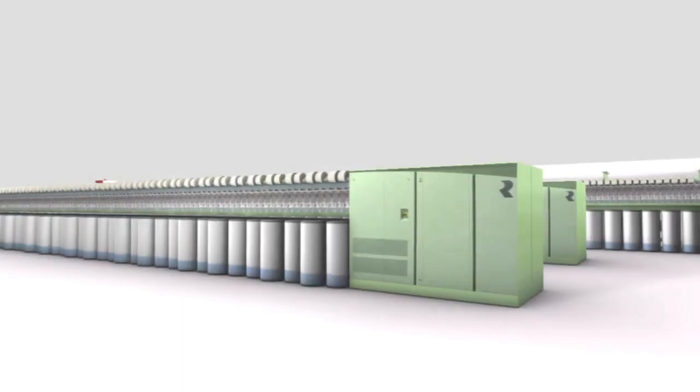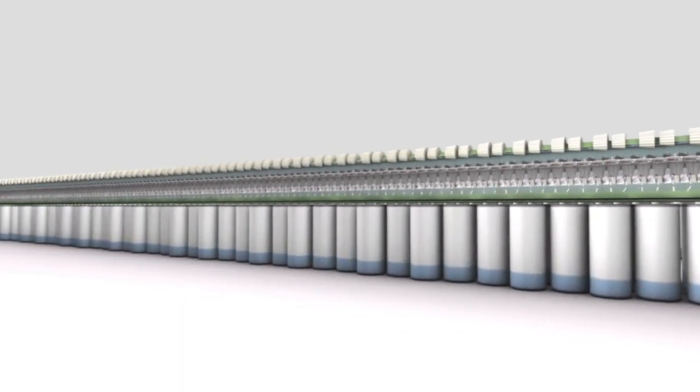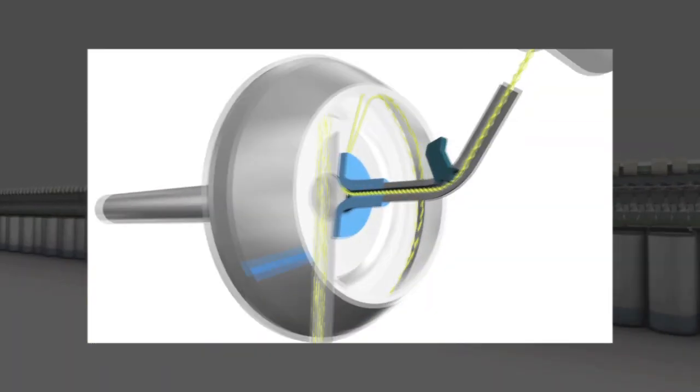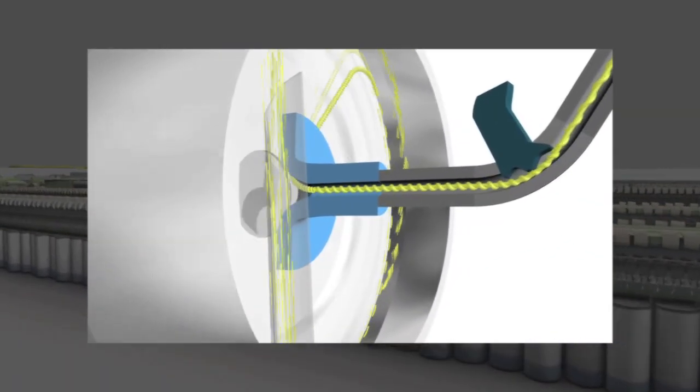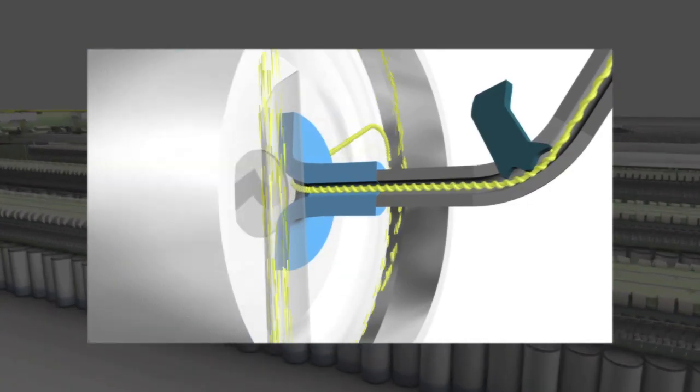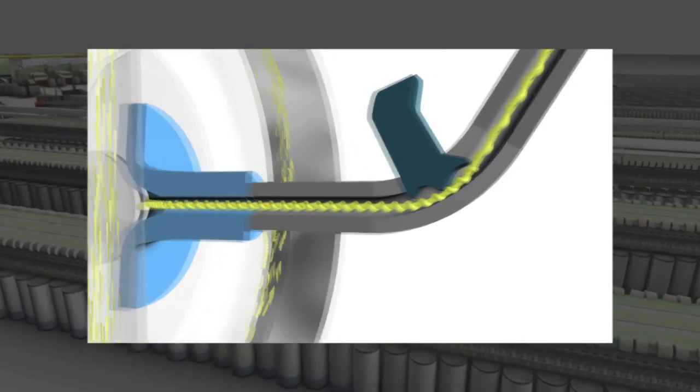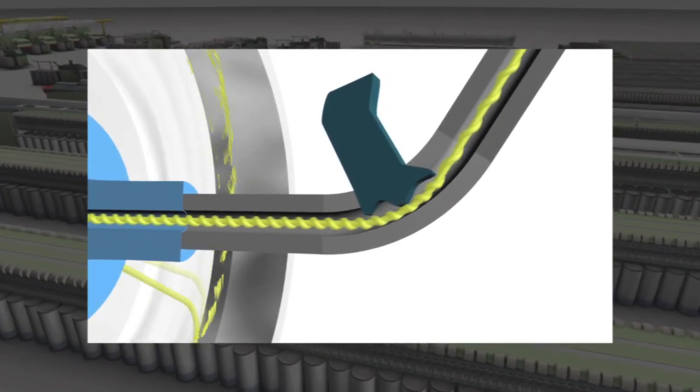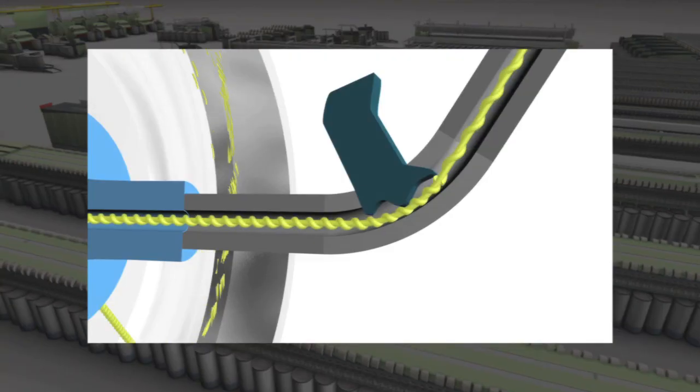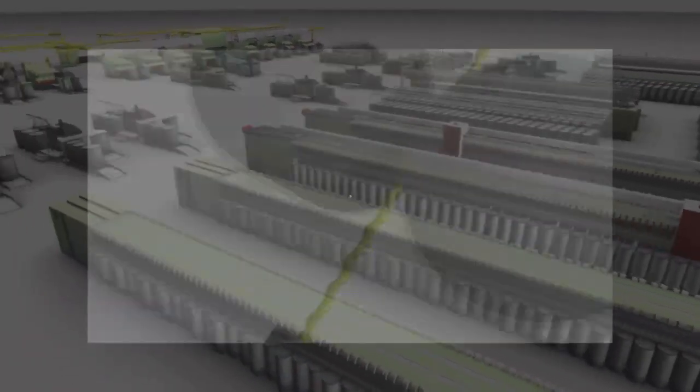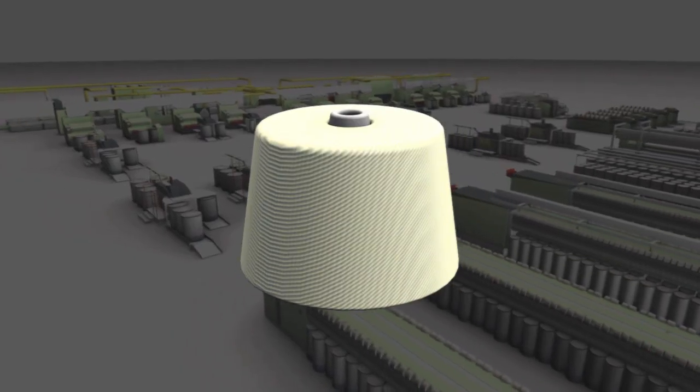Other processes are required to further increase production. In the rotor spinning machine, a rotor with up to 160,000 revolutions per minute takes over the function of ring and traveler. In the spinning box, endless yarn is created and wound onto cross-wound packages.